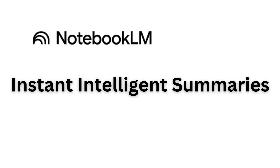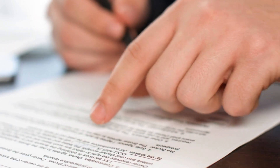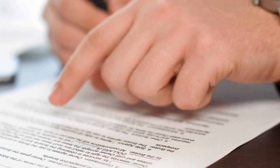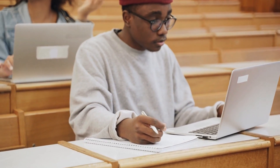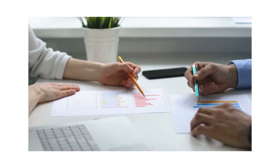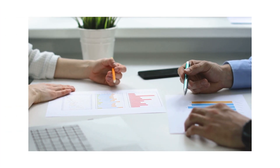Benefit number one: instant, intelligent summaries. Drop in a huge document or article and Notebook LM gives you a clean, easy-to-digest summary in seconds. No more skimming walls of text or copy-pasting into AI tools. Whether you're a student trying to break down a dense research paper or a marketer summarizing reports, this saves serious time.